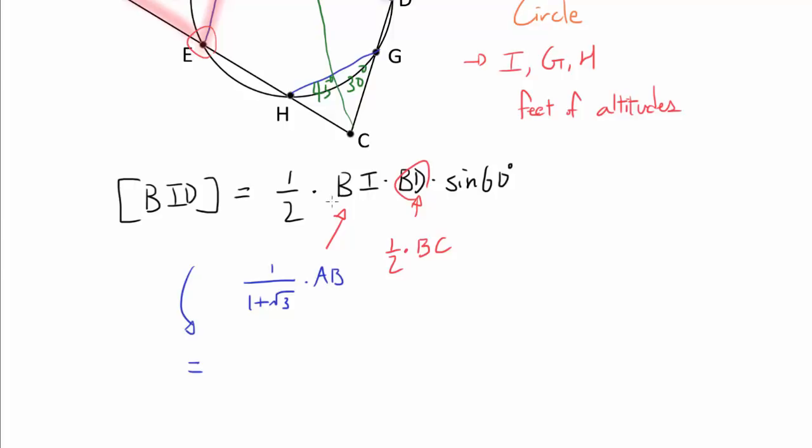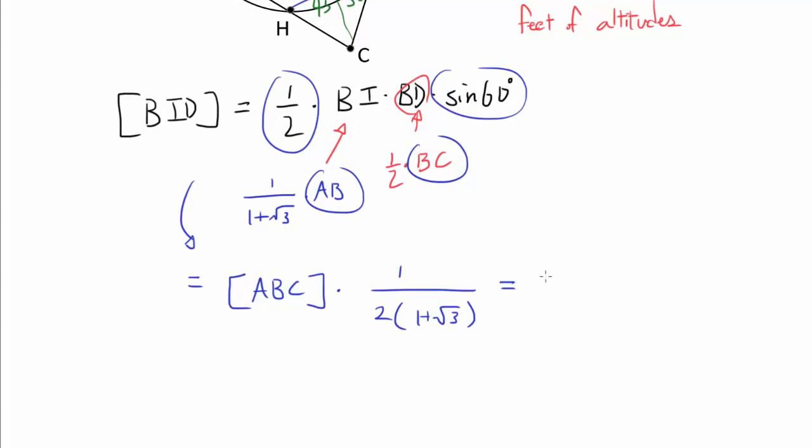So we have an area of BID being 1/2 AB, BC sine of 60, which is the area of triangle ABC times 1 over 2 times (1 plus square root of 3). And we can rationalize this. 1 over (1 plus square root of 3), that's (square root of 3 minus 1) over 2.